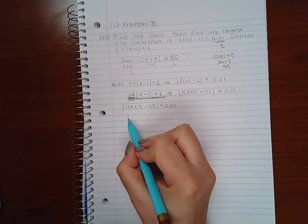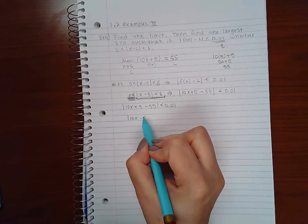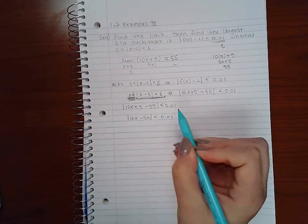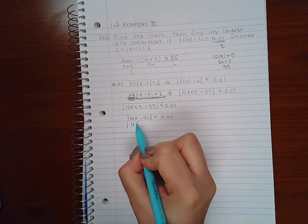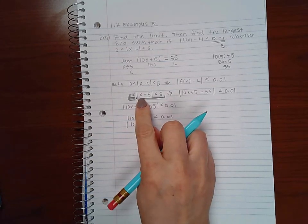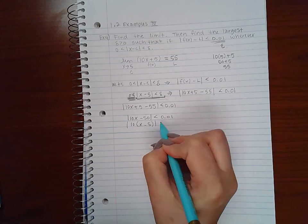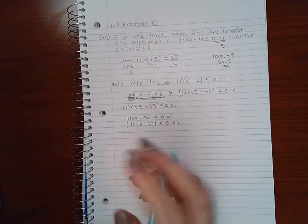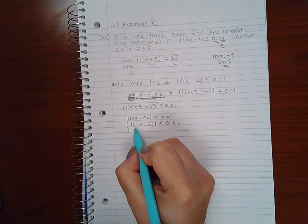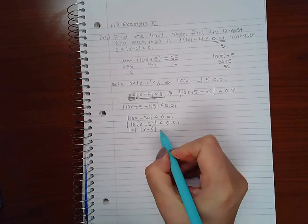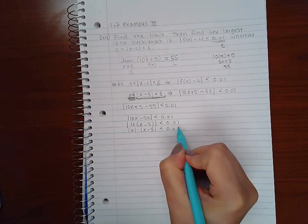So we want to make this look like that so that I know what the delta should be. First thing I'm going to do is combine my like terms, I get negative 50. Then I'm going to factor out my 10 because I do not have a 10 coefficient here.